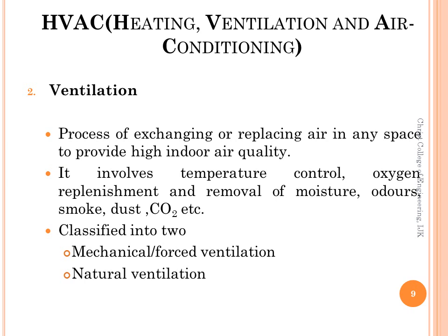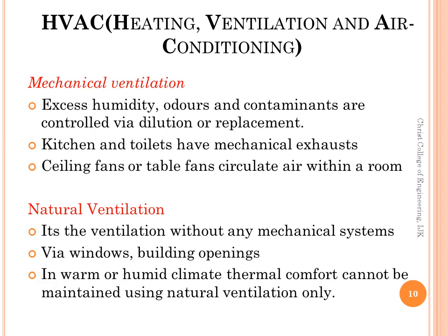The method for ventilating a building may be classified into two types: mechanical or forced ventilation and natural ventilation. Mechanical ventilation is provided by air handler units and is used to control indoor air quality. Excess humidity, odors and contaminants can often be controlled via dilution or replacement with outside air. Kitchens and bathrooms typically have mechanical exhaust to control odors. Ceiling fans or table fans also circulate air within a room by mechanical means.